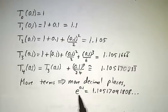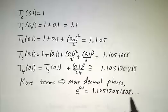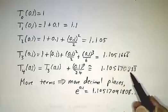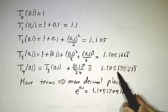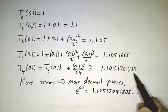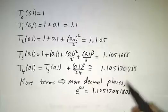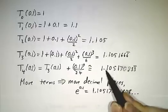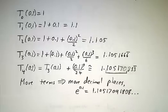The actual value of e to the 0.1 is around 1.10517091818... And by just taking a fourth order polynomial, we're already good to the 1.1051708. And okay, the last couple digits aren't quite right. Sorry, the 0.8 is not quite right. It should be an 0.9. But we have six digits of accuracy by using a fourth order polynomial.